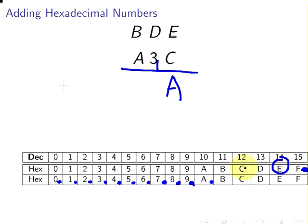So we have D plus 4. So we'll start here now. So D, 1, 2, 3, 4. So that gives us 1 there again. And carry the 1.